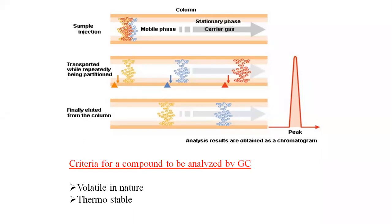The red-colored samples are separated first, so we get a peak for the red color sample. After that, the blue color compound elutes and we get the blue color peak. Finally, the yellow color compounds are eluted from the column or stationary phase. In this way, compounds are separated based on their affinity and distribution between the stationary phase and mobile phase.